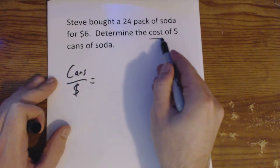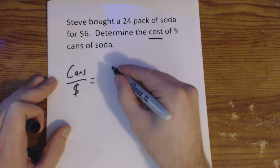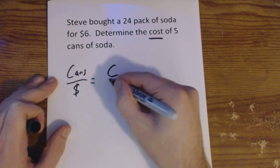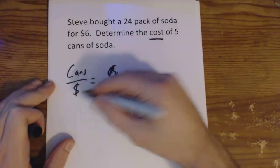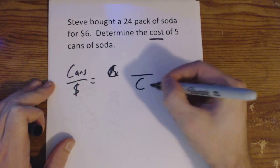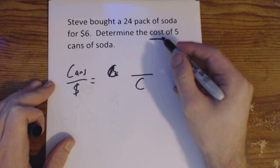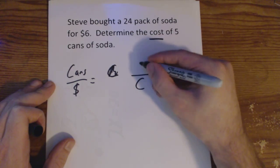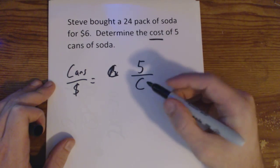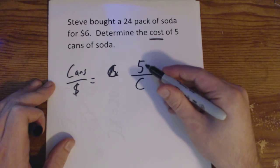So in our first example, what are we trying to find here? We're trying to determine the cost. Cost is what we want to find. So I'm going to put a C in for cost. Oh, let me rewrite this. I have money on the bottom. I'm going to put a C down here for cost. We want to find the cost of what? The cost of five cans of soda.